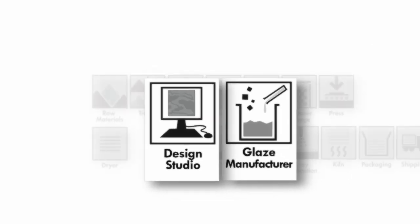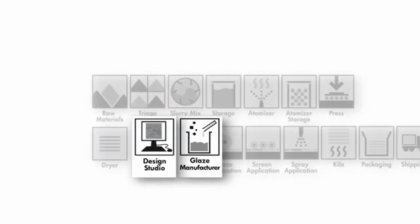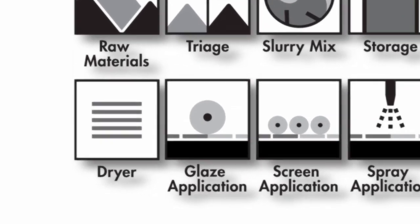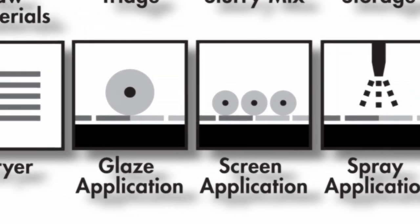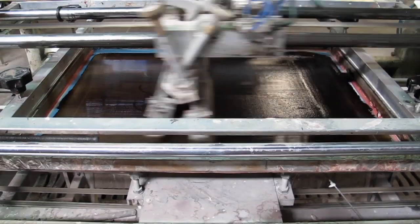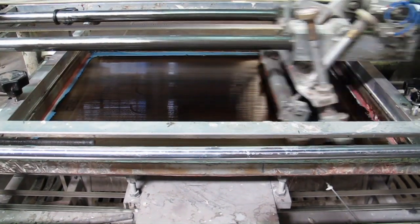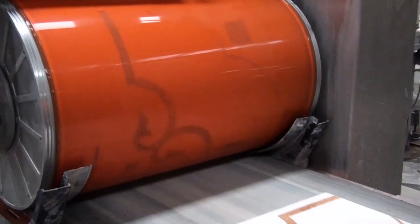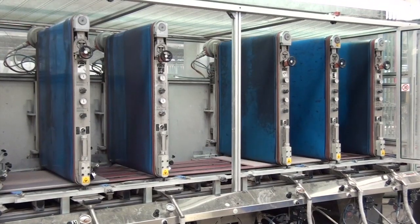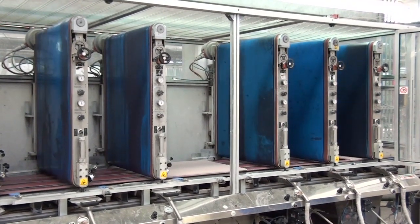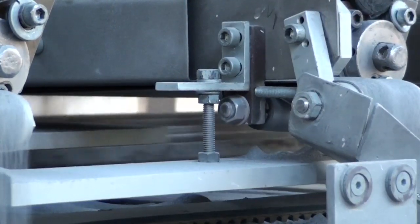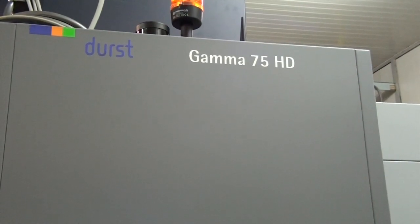Once the tile design and the glaze are chosen, it is time to print the pattern of the tile and to apply the glaze. There are several printing methods, including screen printing — either by flat screen, rotary cylinder screen or roto screen, or vertical silicon screen. There is also the vertical dry method, and of course the most cutting edge method, digital technology.